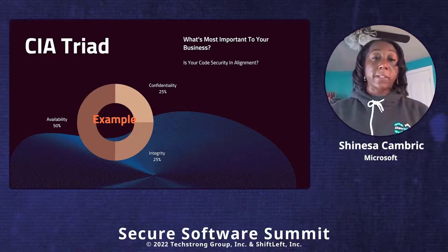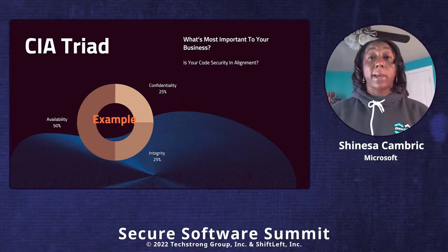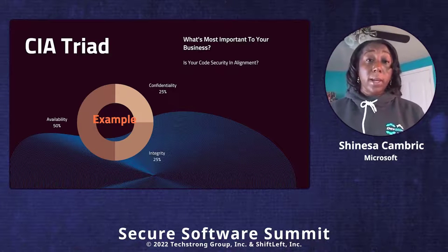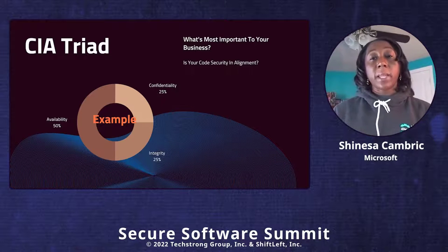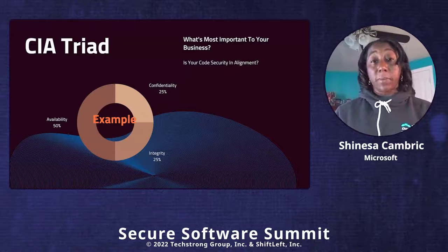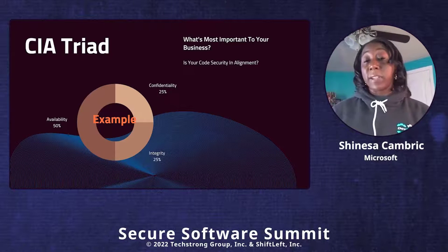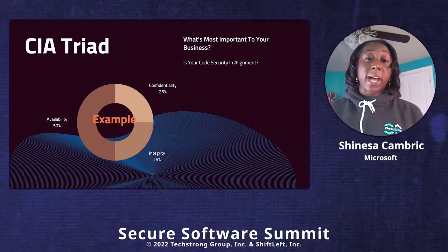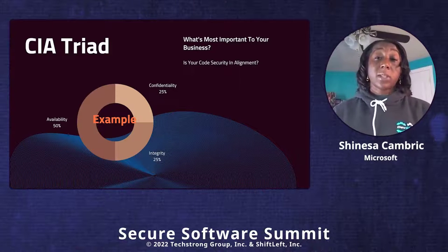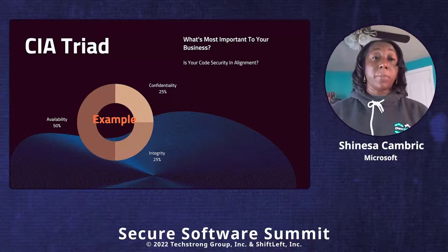Something else that requires a mindset shift when applying zero trust to secure software is that you may want to consider CIA — confidentiality, integrity, and availability — when it comes to your code. In security we talk about this a lot, but it should also apply to software security. What's important here is understanding the goals of your business around these three different areas. This will help provide a starting point for where you focus your security efforts. Should integrity be the most important thing for your business, that doesn't mean you leave the other two out — it's a starting point of how you secure your code.